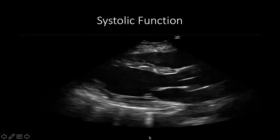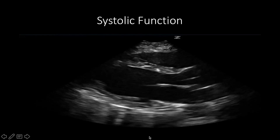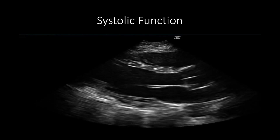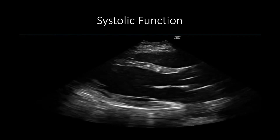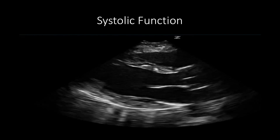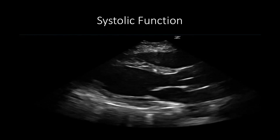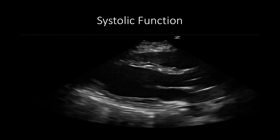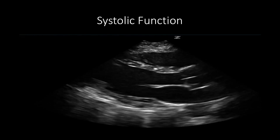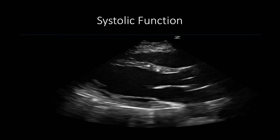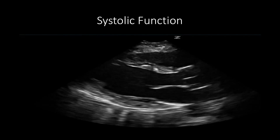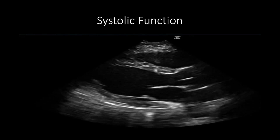We can tell that this heart has good systolic function because the myocardium of both the septal and inferior walls of the ventricle are contracting strongly, as well as the mitral valve leaflets hitting the ventricular walls.